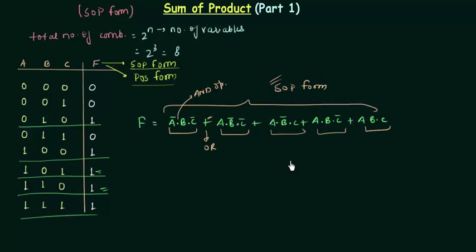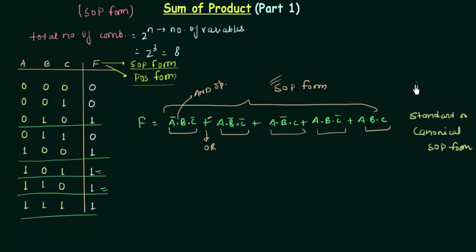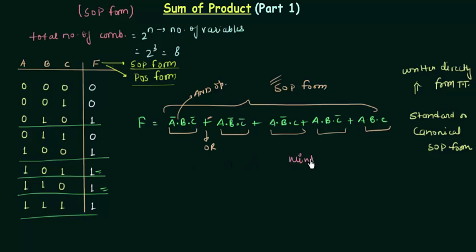This particular form I call as the standard or canonical SOP form, because I am writing it directly from the truth table. The standard or canonical form is written directly from the truth table. You can also minimize this to get your minimal SOP form, which I will explain in a minute. But before that let me explain one important thing — that is the min term.